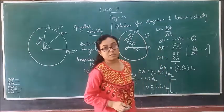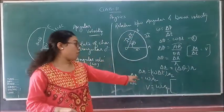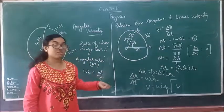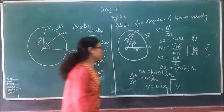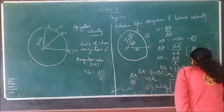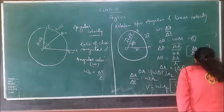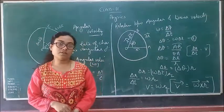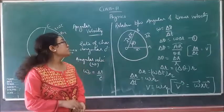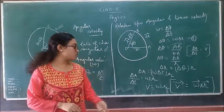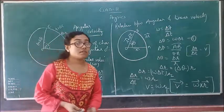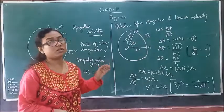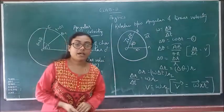My final expression is in vector form: v = omega cross r. This expression gives the relation between linear velocity and angular velocity. Today we read about angular velocity and the relation between linear and angular velocity. Next we will read about acceleration. Please revise. Thank you.